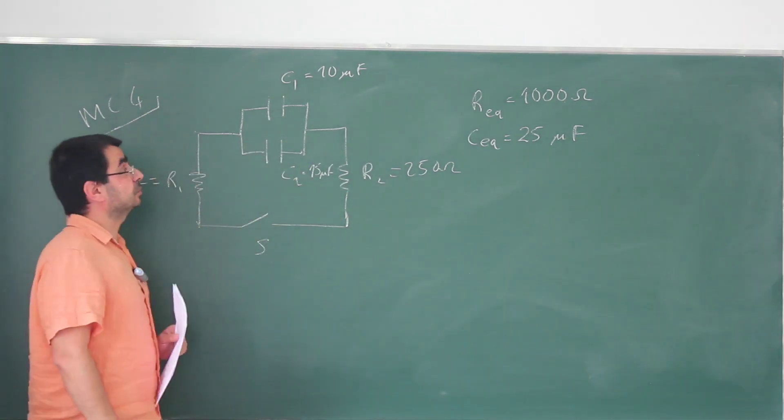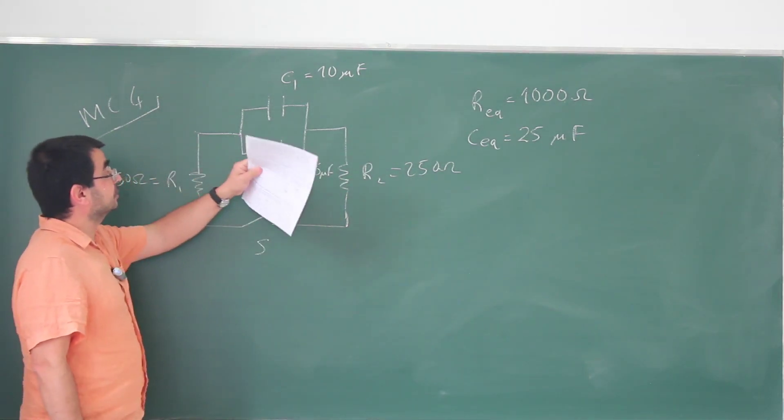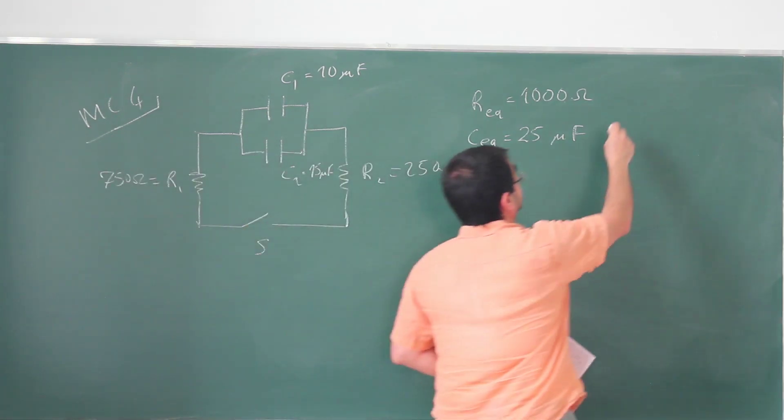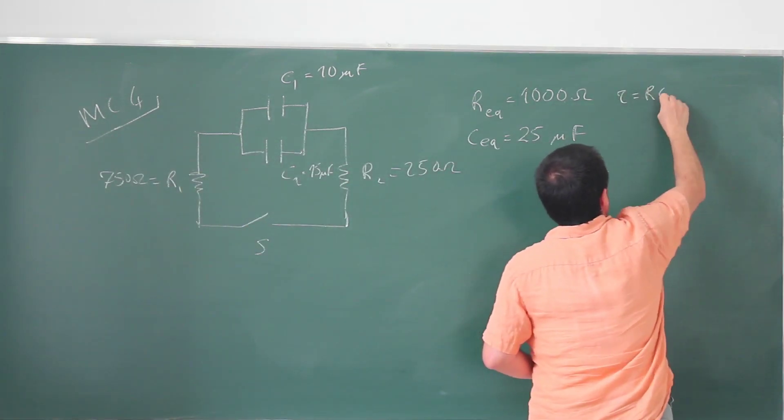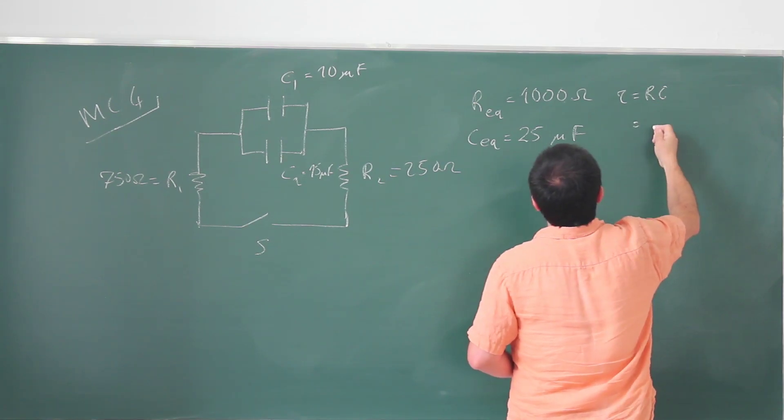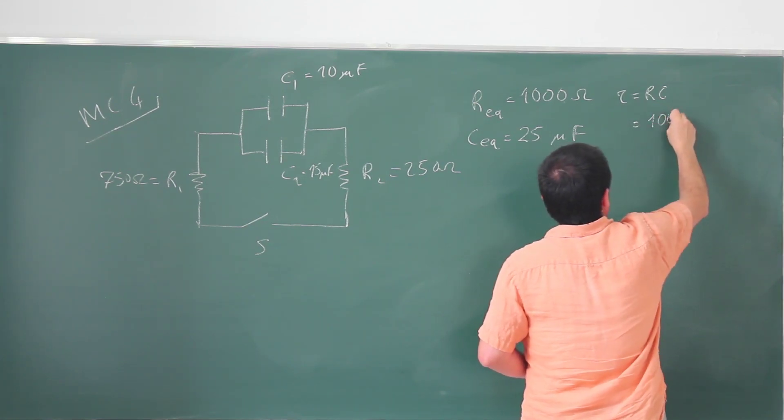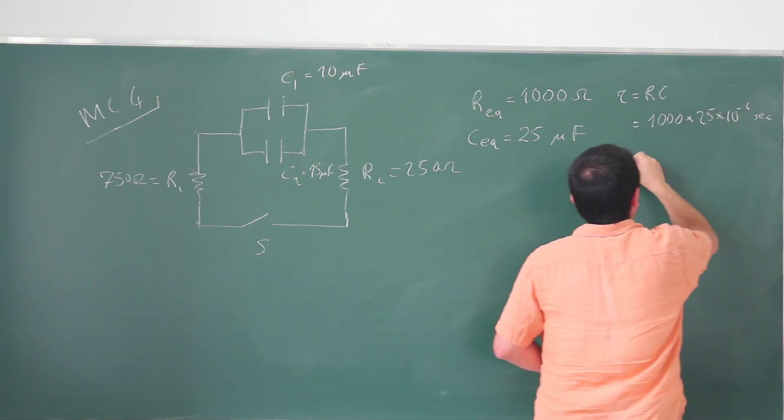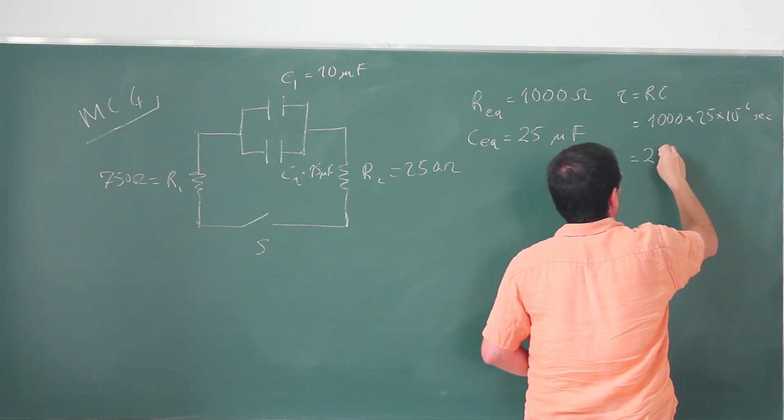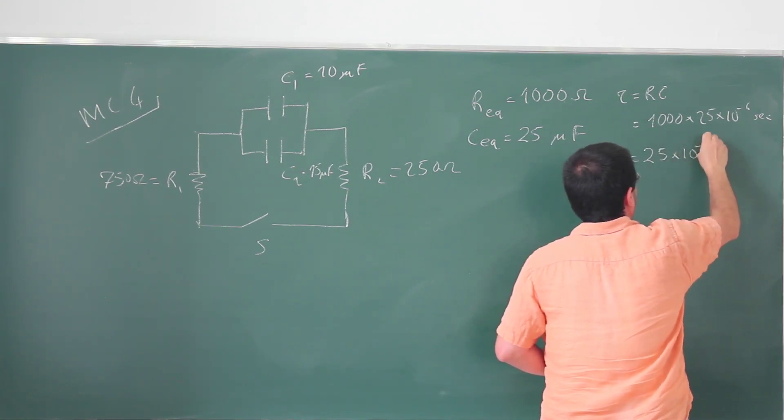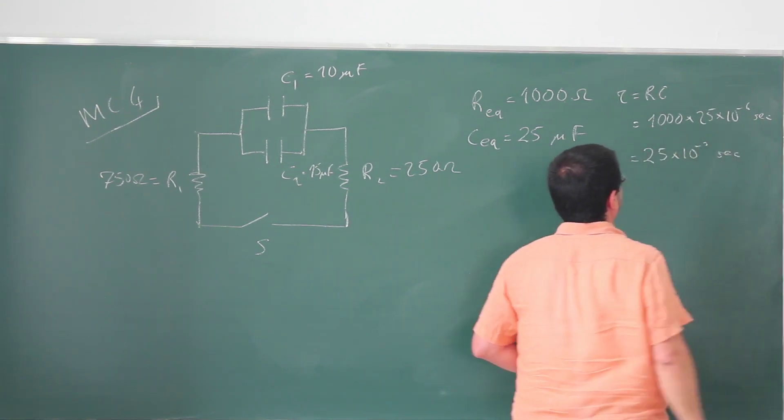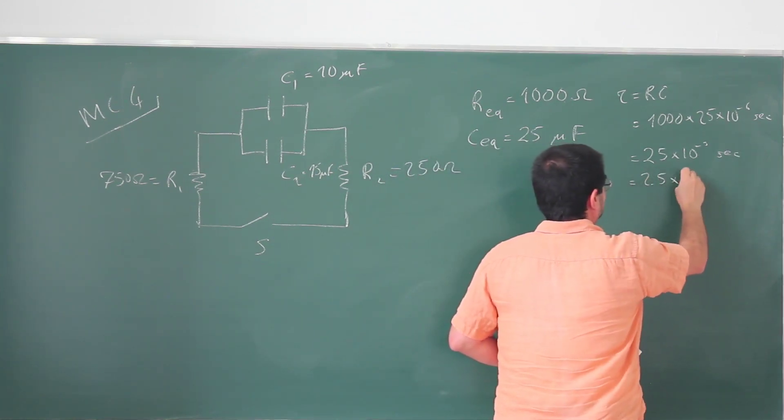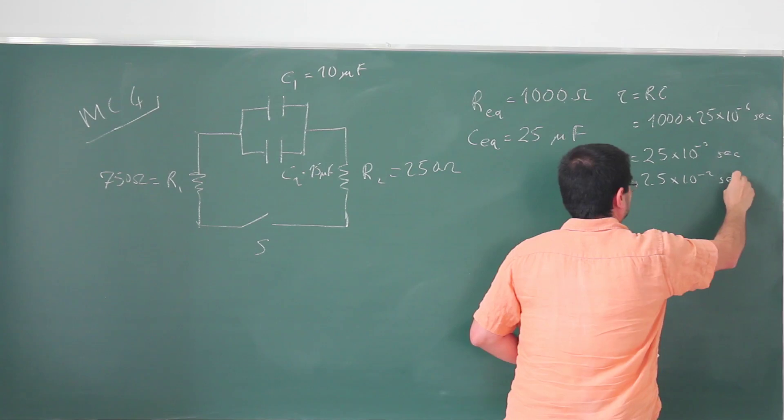Now the time constant in an RC circuit connected this way, when the capacitor is in series to a resistor, the time constant is R times C. In this case, this is just going to be 1000 times 25 times 10 to minus 6 seconds, so this is 25 times 10 to minus 3 seconds, or we can make this 2.5 times 10 to minus 2 seconds.